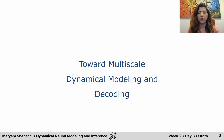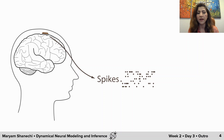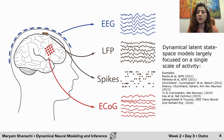Why do we care about multi-scale modeling? Our behavior involves brain networks, both at the small scale and at the large scale. At the small scale, we can measure the brain using spiking activity. At larger scales, we can measure it using LFP, ECoG, or even EEG. You've already seen dynamical latent state space models that are largely focused on a single scale of activity. The question is, can we develop latent state space models that describe all of these signal scales simultaneously?